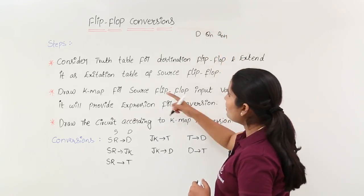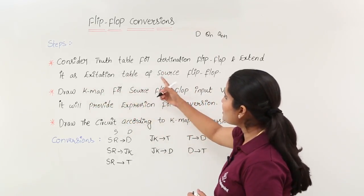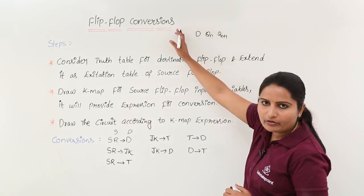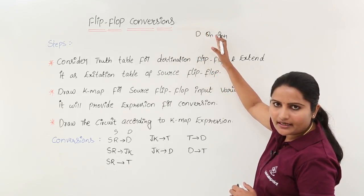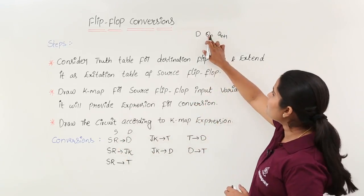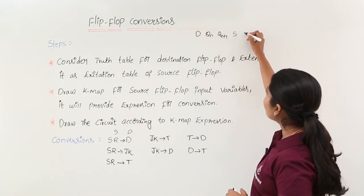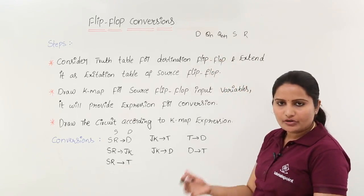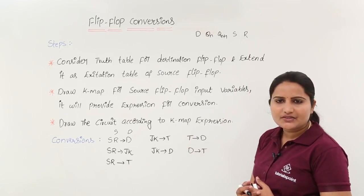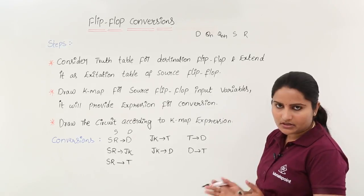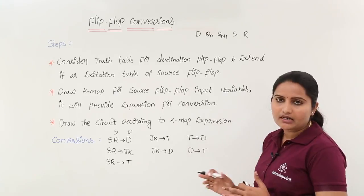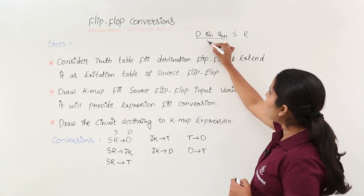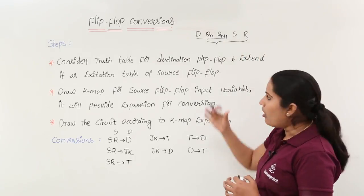After taking the truth table of the destination flip-flop, you forget about D and start making the excitation table of the source flip-flop — that means the SR flip-flop — by considering Qn and Qn+1. Here you are taking the mandatory inputs of SR for each combination of Qn and Qn+1. This will be shown in the next classes after doing 2 or 3 conversions, which is very easy once you know the truth tables and excitation tables. Please follow these steps in the next classes.